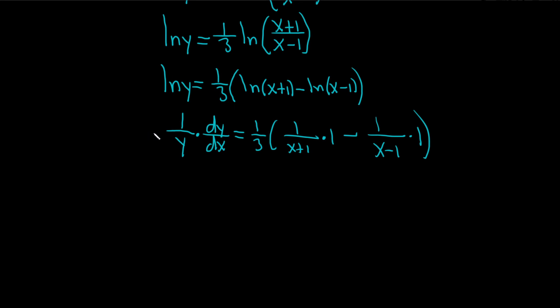All right, last thing to do is multiply by y, so dy/dx equals—I'm going to put a y here and put a y here. So we get 1 third y, parentheses, 1 over x plus 1 minus 1 over x minus 1.